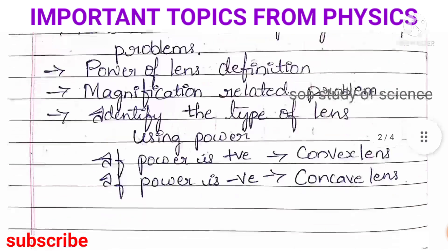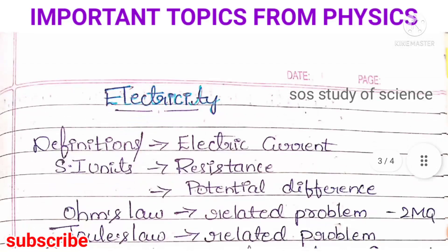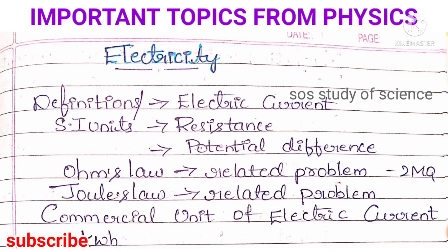Moving to the next lesson: Electricity. For this particular lesson, 6 marks is allotted. Important things you need to study are definitions and SI units — very important. Write all the definitions and SI units at one place and learn them. For example, they can ask about electric current, resistance, and potential difference. Ohm's law or Joule's law related problems can be asked for two marks, and you must learn the difference between Ohm's law and Joule's law.